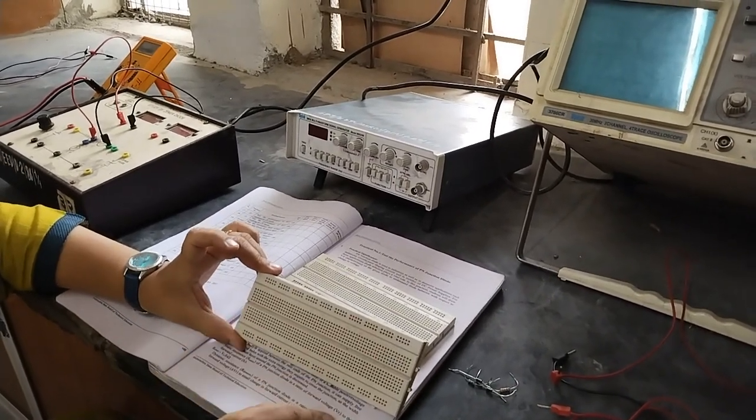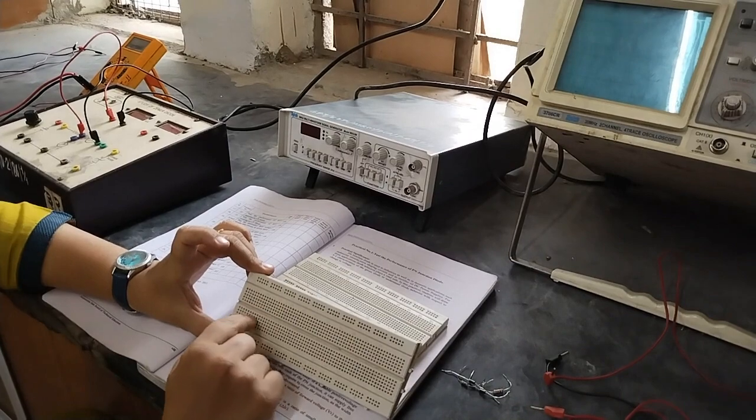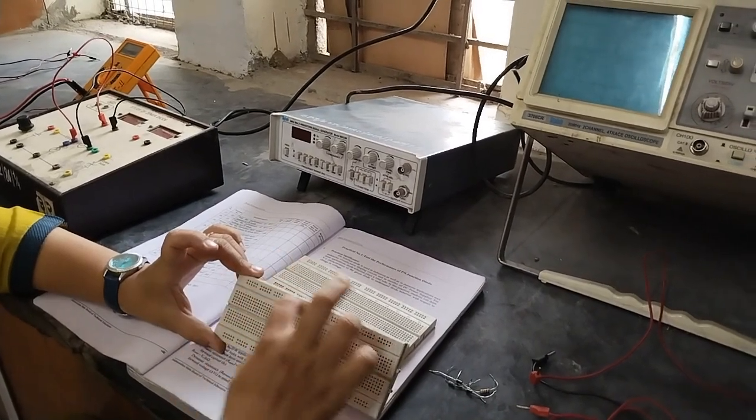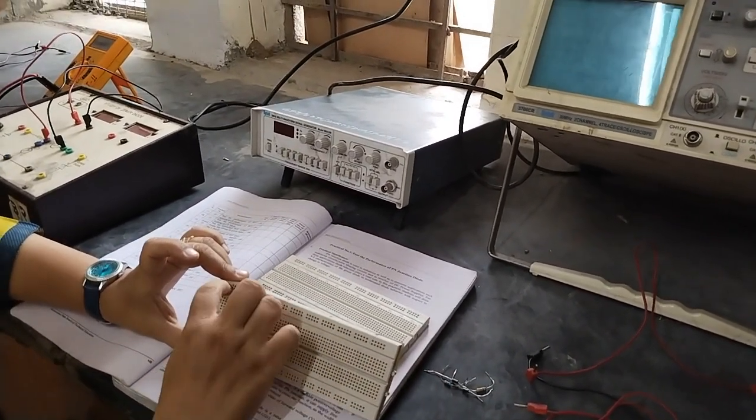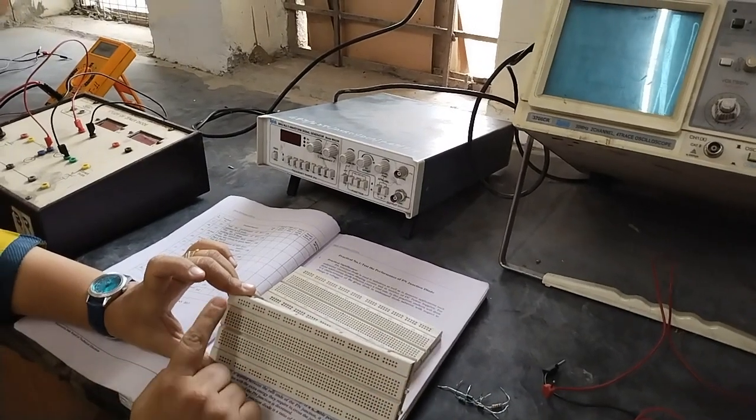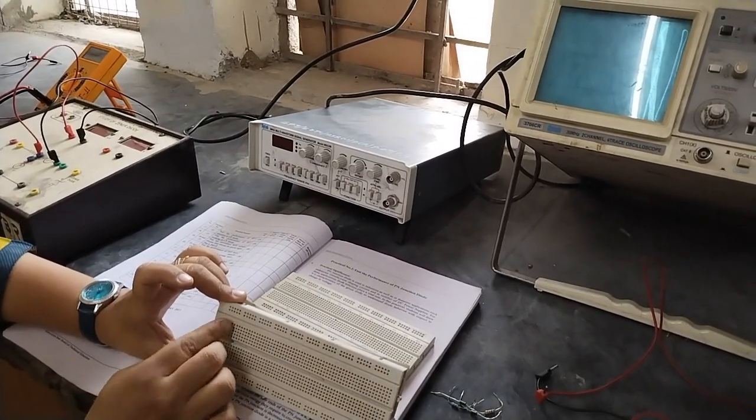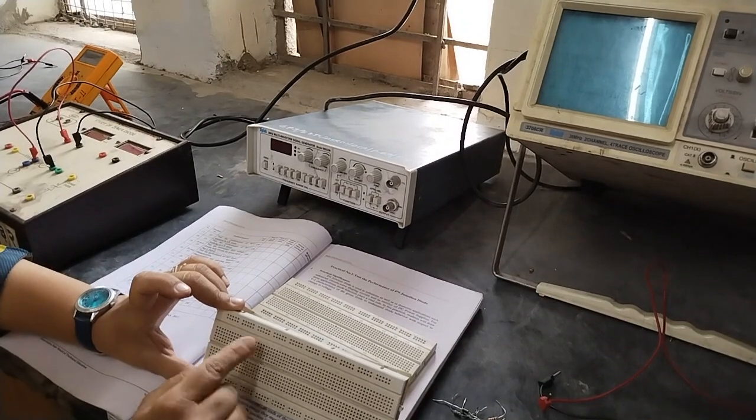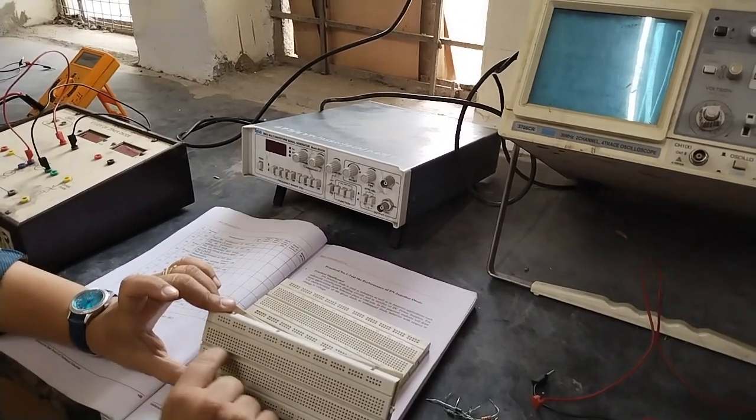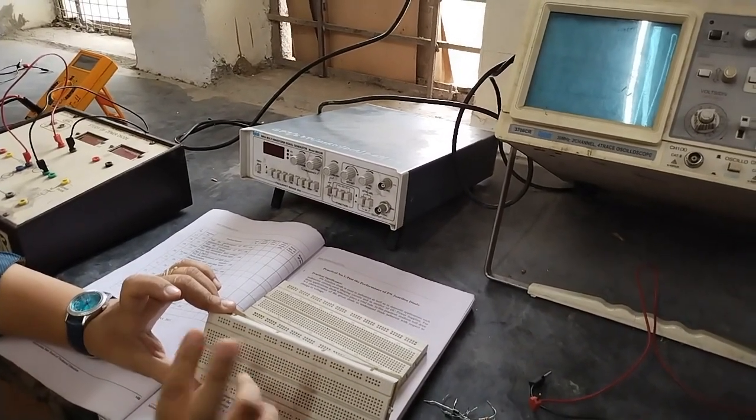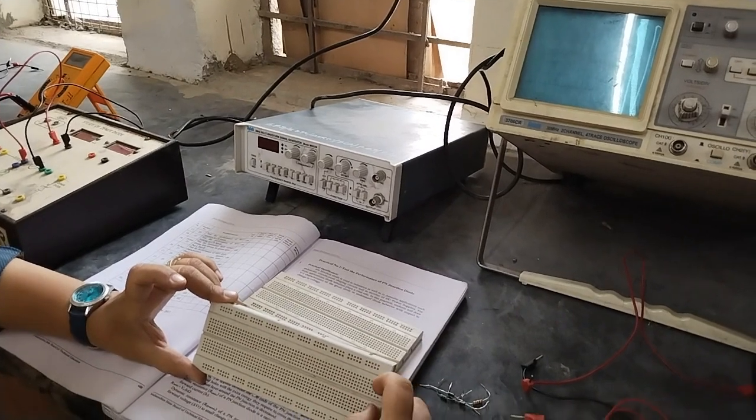This is called as breadboard. It has 4 parts. Two parts are connected horizontally, that is upward and downward parts are connected horizontally, and middle two parts are connected vertically.